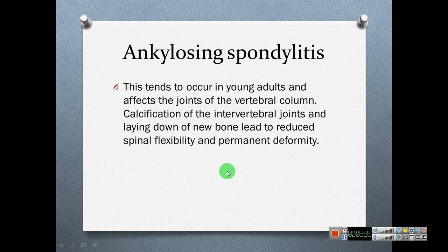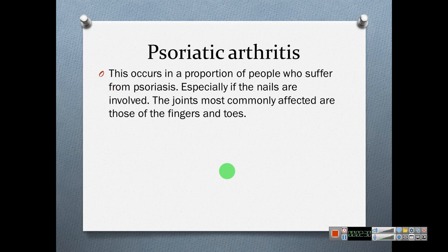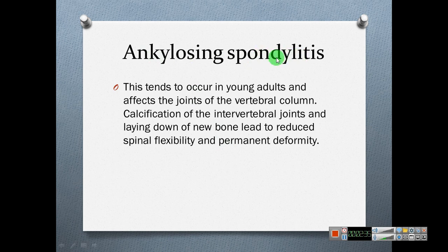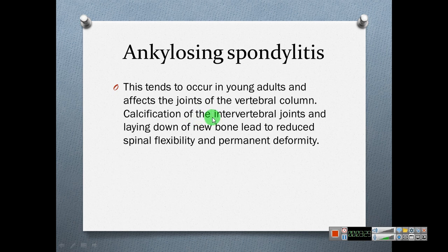Ankylosing spondylitis — you may have heard of spondylosis or spondylitis. This tends to occur in young adults and affects the joints of the vertebral column. Calcification of the intervertebral joints and laying down of new bone lead to reduced spinal flexibility and permanent deformity. Some patients, especially females, complain of pain or paresthesia in the hand, usually affecting the cervical bones, and doctors may advise wearing a cervical collar.